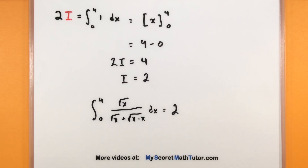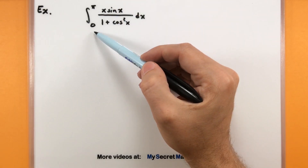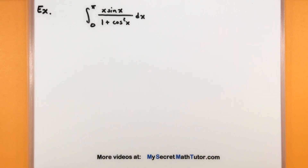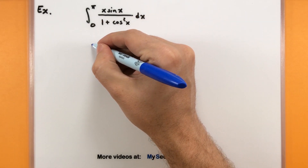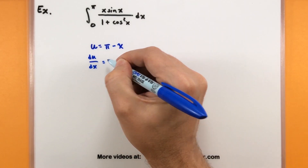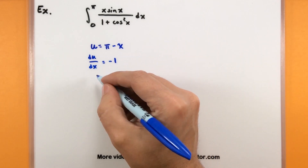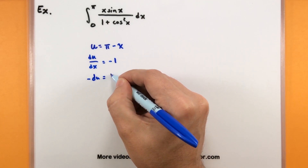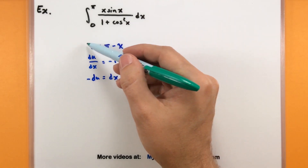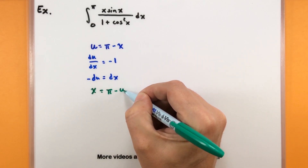Let's do this one more time with an even trickier example. This integral goes from 0 to π and involves x sine of x divided by 1 plus cosine squared of x, dx. Again, it's not very clear how substitution is going to help, but we're going to say u equals π minus x. Taking its derivative gives a negative 1, and solving for dx gives negative du equals dx. We also solve for x: x equals π minus u.